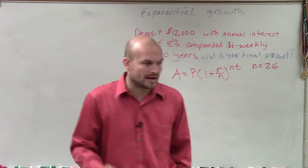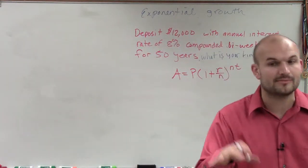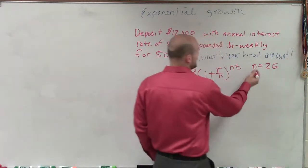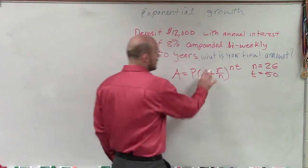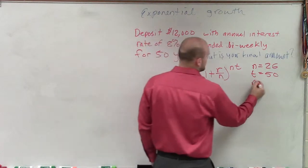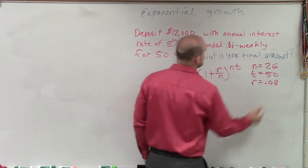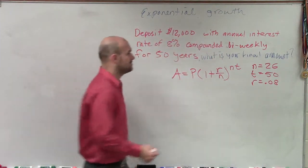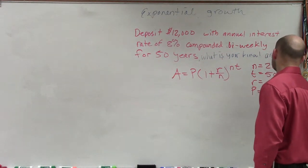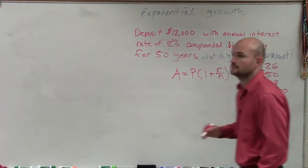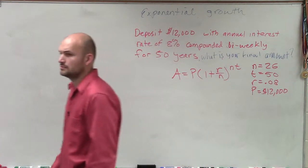And ladies and gentlemen, what I would probably recommend for doing these problems to really make sure that you're not going to be making any mistakes is you can always just make sure you label out what everything is going to be. R is your interest rate in decimal form, so it would be 0.08, and P equals $12,000.